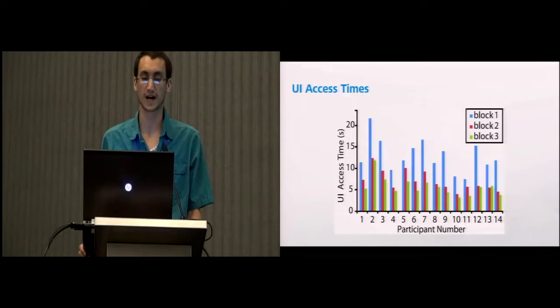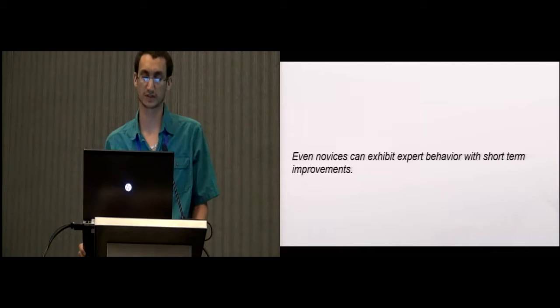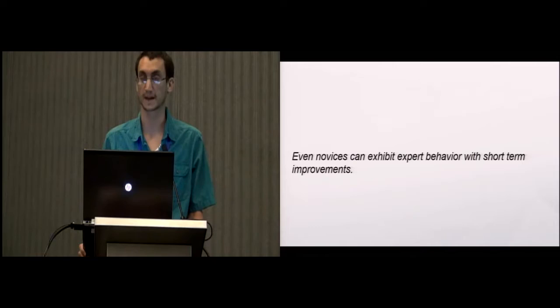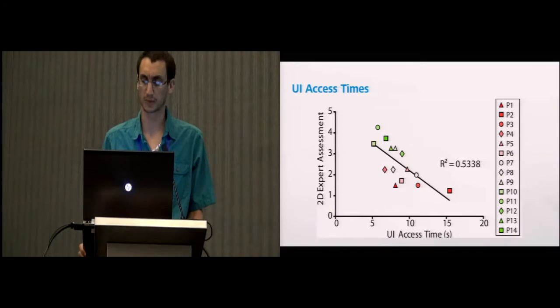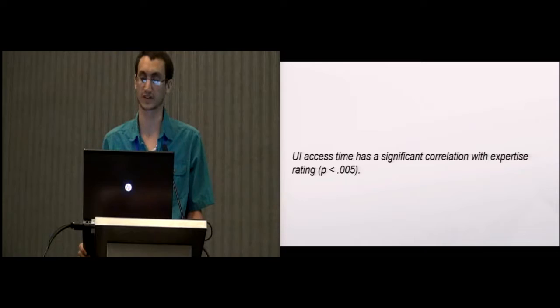Then we looked at results from the UI access tasks, where they had to access items either from the menu or the ribbon. This was separated into three blocks of trials. What's interesting is you see even for the more expert users, their skill progressed from the start to the end of that study, even for novice users. This shows that even novice users can exhibit expert behavior with short-term improvements, so it's really important to consider long-term learning effects as well. But despite that, there was a correlation. This reiterates some prior literature that UI access time is an indicator, or can be an indicator, of an expertise level, and it had a significant correlation with the expertise ratings.